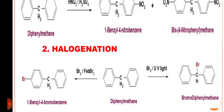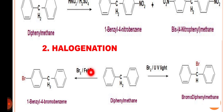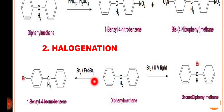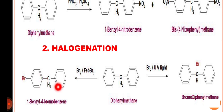The second reaction is the halogenation reaction. Here, the starting material is diphenylmethane, which when reacted with bromine in the presence of FeBr3 undergoes the classical bromination reaction — an example of electrophilic aromatic substitution. Once again, the substitution takes place at the para position of one of the benzene rings, and the product obtained is 1-benzyl-4-bromobenzene.